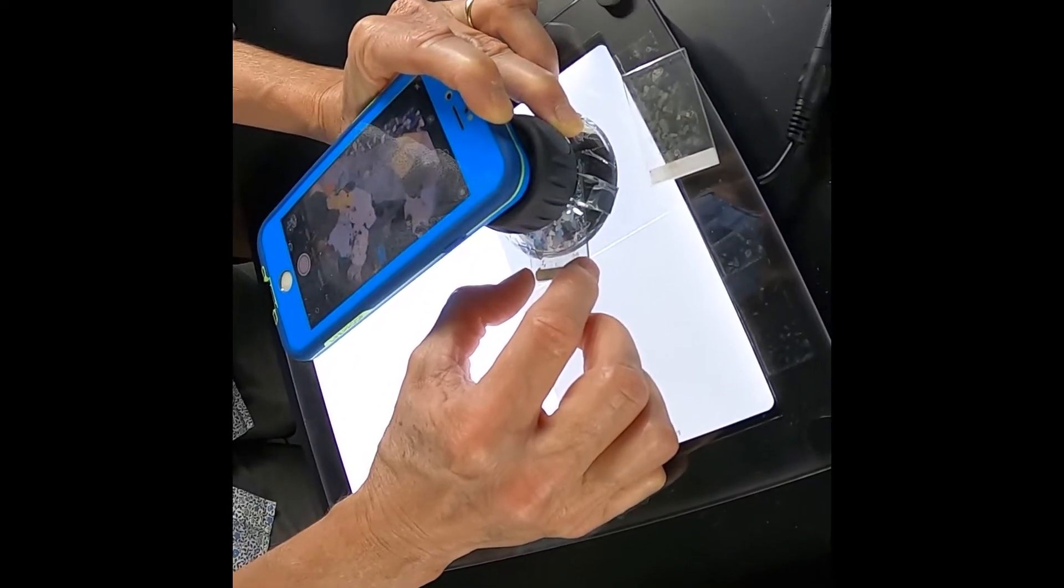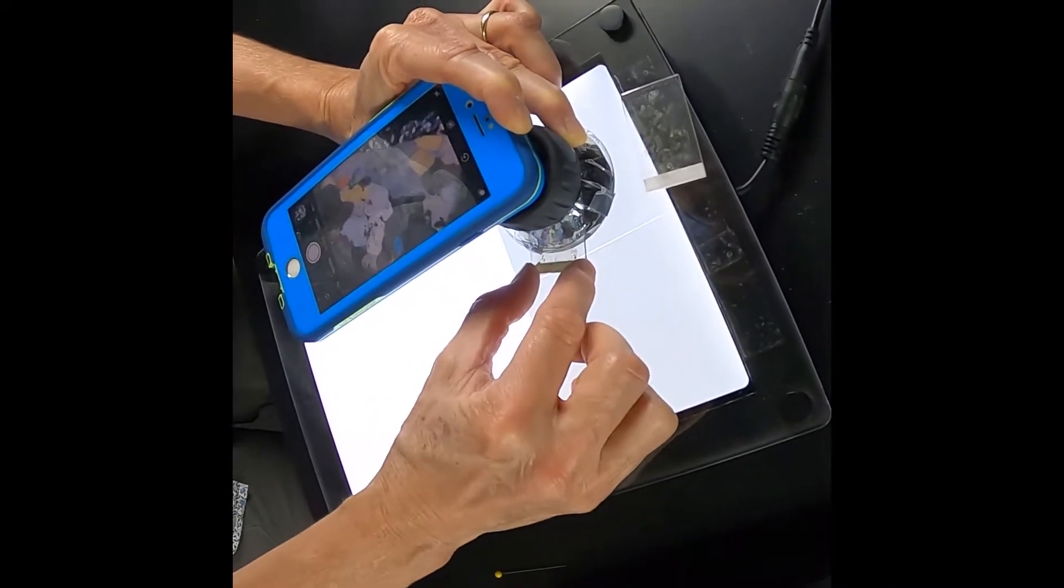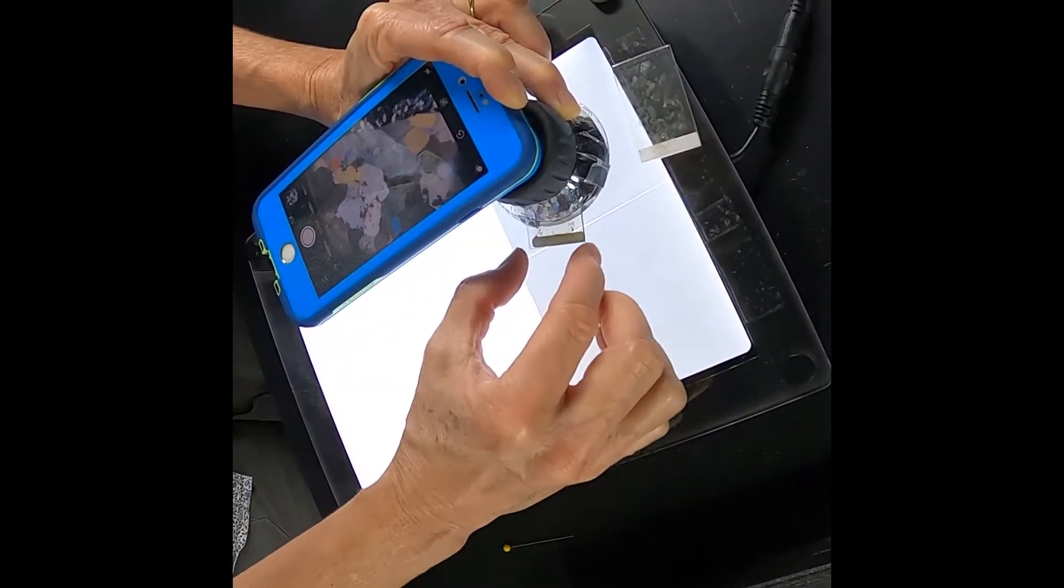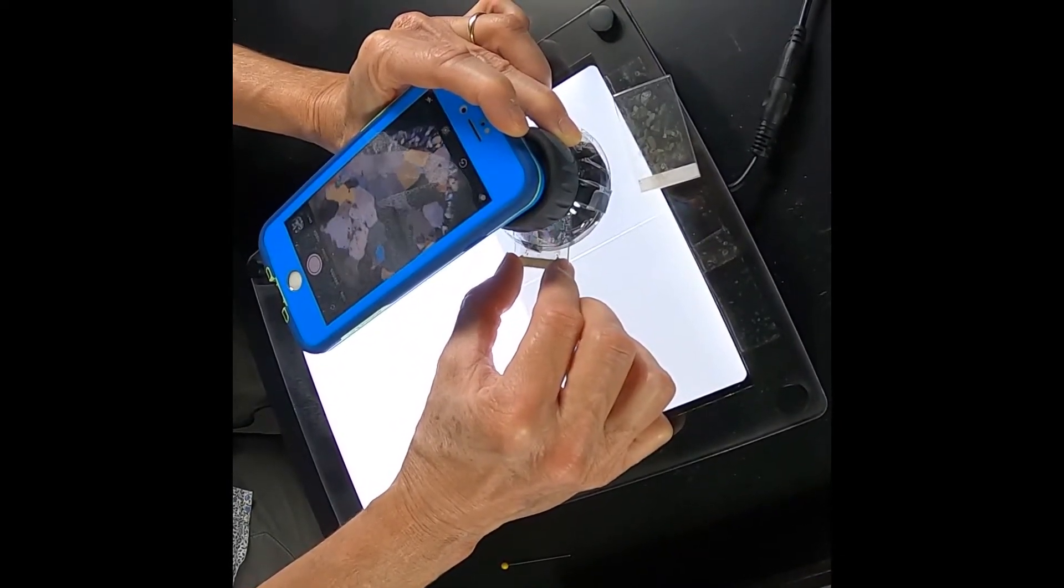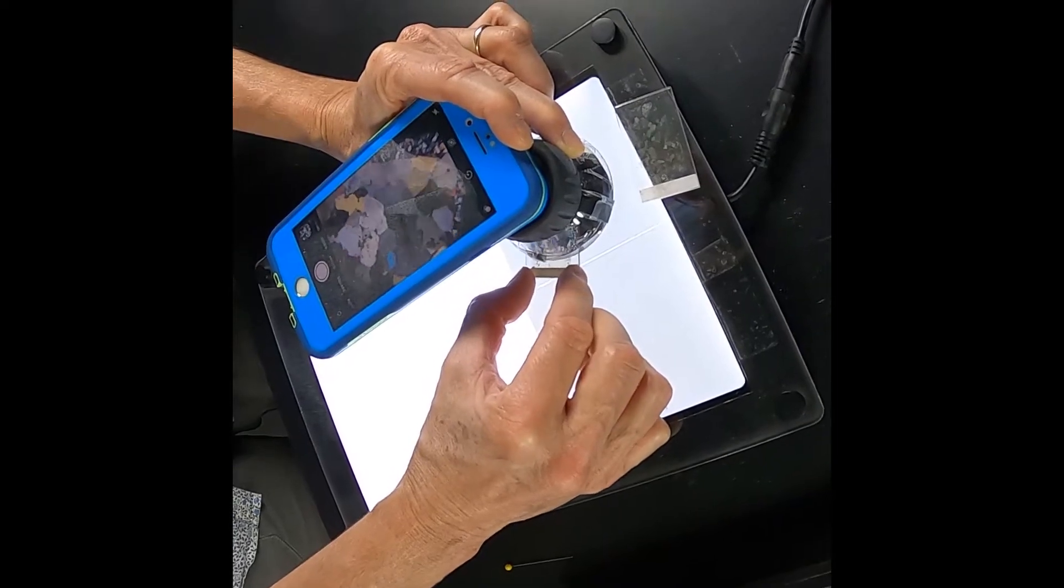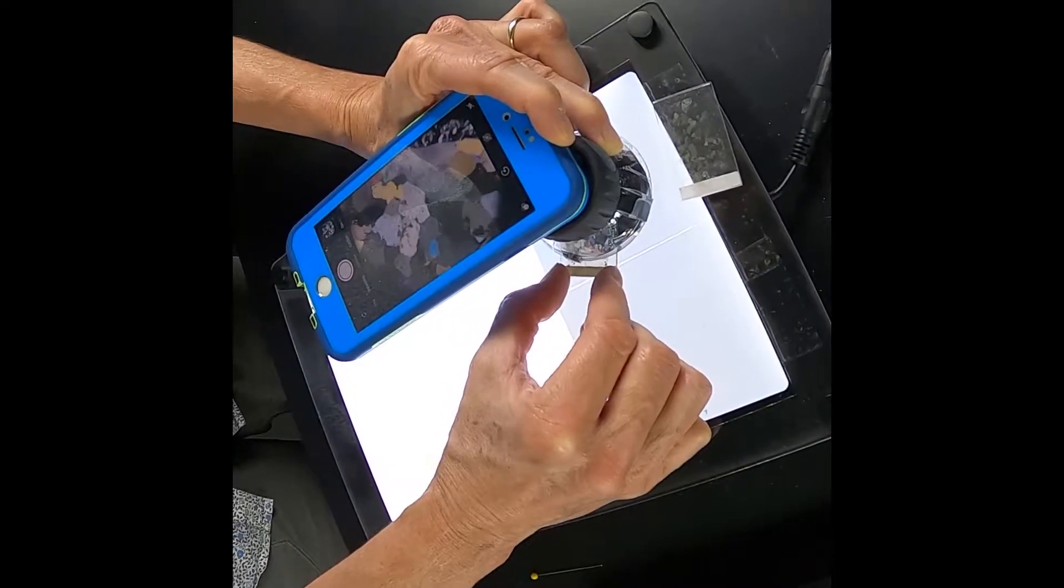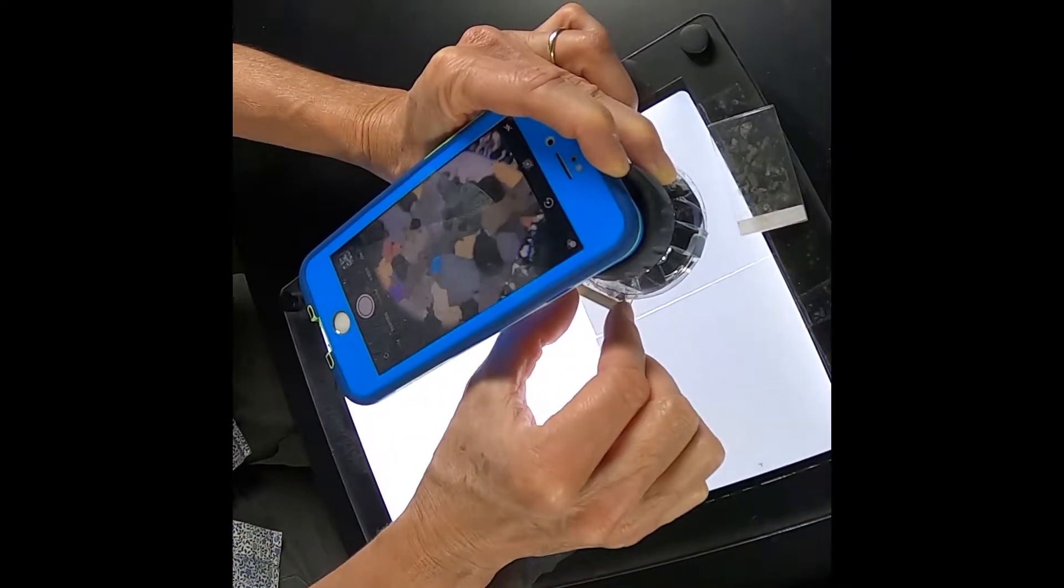When we're looking at extinction and interference colors, this is going to be tricky for us because we ideally need to be able to hold on to the edge of our thin section and watch our thin section at the same time. With our microscope stage, this is very much easier.